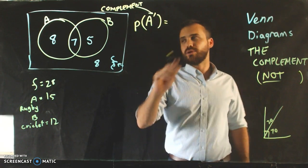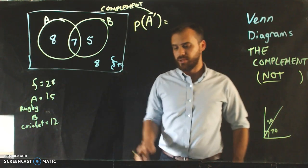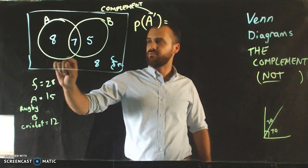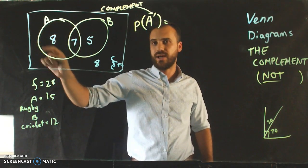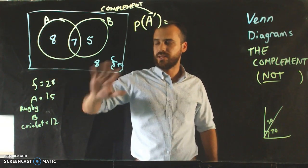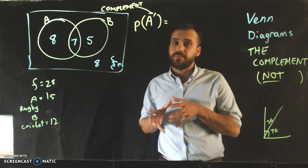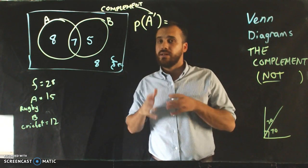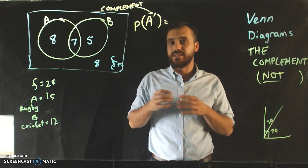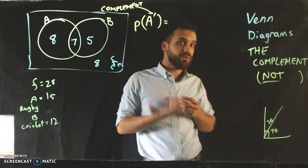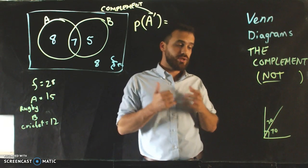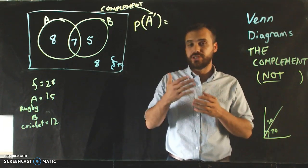You guys can probably work that out pretty quickly. We can see here that 15 people are in set A, and there's 28 people altogether. So that means 13 people aren't in set A. The probability of not being in set A is 13 over 28.